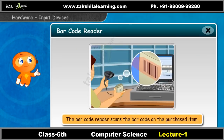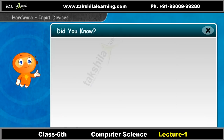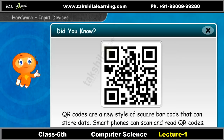Have you seen barcodes on products in departmental stores? A cashier at the bill counter uses the barcode reader to scan the barcode on the purchased item. Then the price will show on the computer. Did you know? QR codes are a new style of square barcode that can store data. Smartphones can scan and read QR codes.